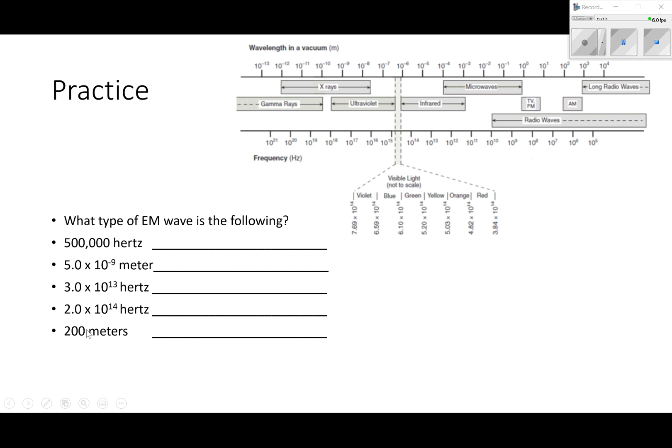200 meters. That's two times 10 to the two. It's meters so that's wavelength. 10 to the two meters - that's right here, that's radio waves. You could put somewhere in here if you wanted to say AM, I wouldn't mark it wrong, but radio waves. We're just picking them off of this spectrum.